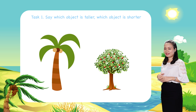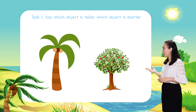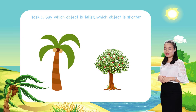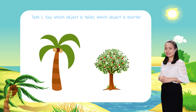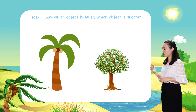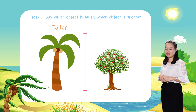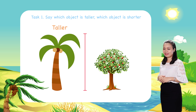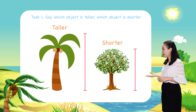Look, we have a coconut tree and an apple tree. Which one is taller? Which one is shorter? Alright, so the coconut tree is taller than the apple tree, or the apple tree is shorter than the coconut tree.